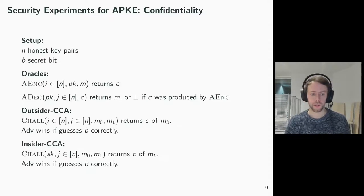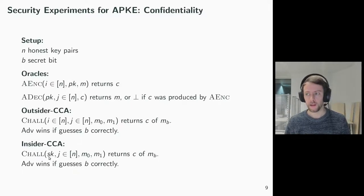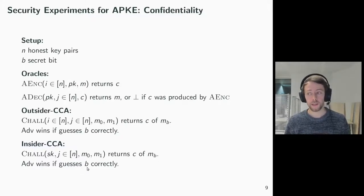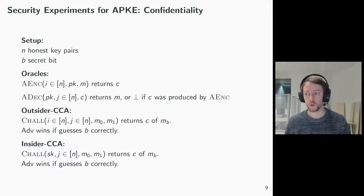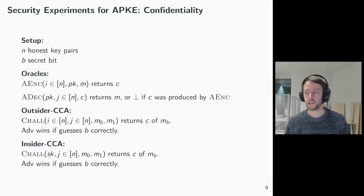For insider CCA, we let the adversary choose the sender secret key SK. Likewise, the adversary wins if it guesses the secret bit B correctly. Insider CCA is a stronger security notion than one where we would only allow to compromise some of the honestly generated keys. Also, our security notions are adaptive in the sense that the adversary is allowed to make multiple calls to the oracles in any order. So what we have here are confidentiality or semantic security expressed as a left-or-right indistinguishability game.